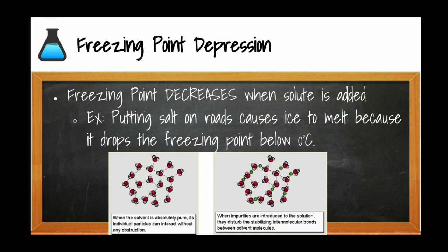The other colligative property is called freezing point depression — when adding a solid to a solution, the freezing point decreases. This is why we add salt to icy roads. Ice usually forms at 0°C or lower, but adding salt lowers the freezing point to around −2°C, so ice won't form until that lower temperature. Adding solute to a pure substance creates intermolecular forces that make it harder for the substance to freeze and boil.